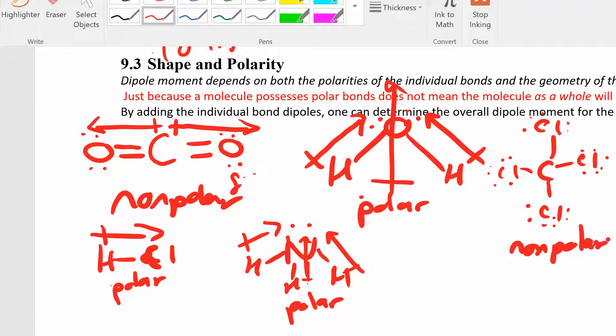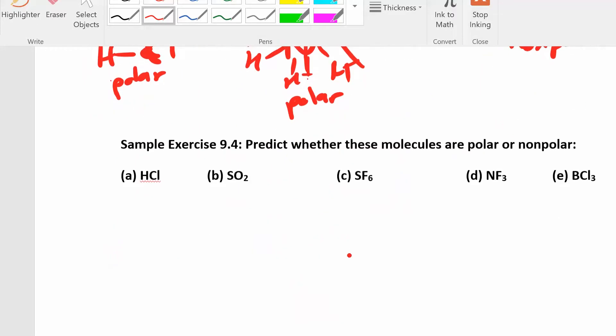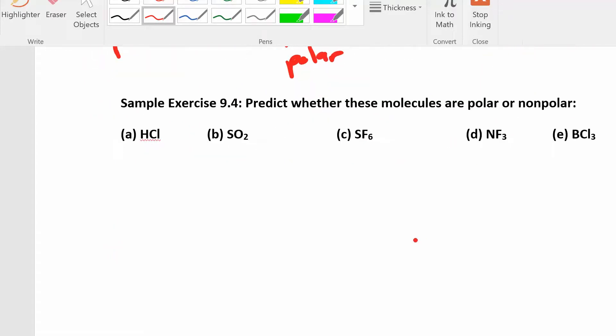So in order to figure out if something's polar or non-polar, I'm going to show you a little cheat sheet next, and that will help us. So actually just a couple more examples and then I'll try to break it down. So HCl, draw the Lewis structures. Remember how to draw Lewis structures.